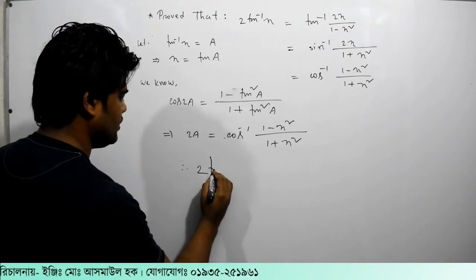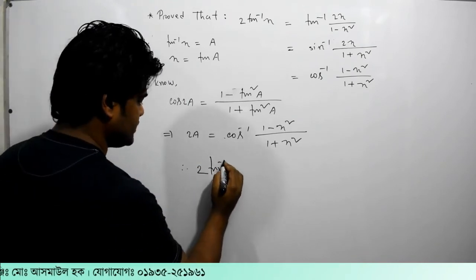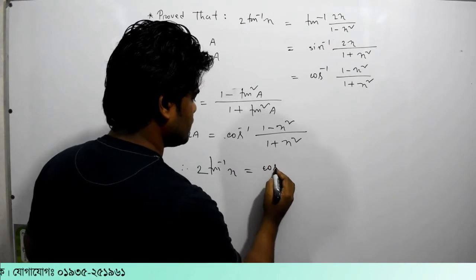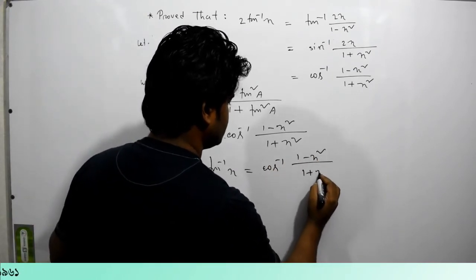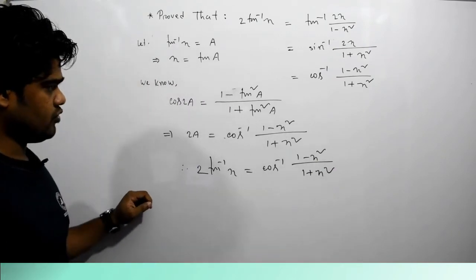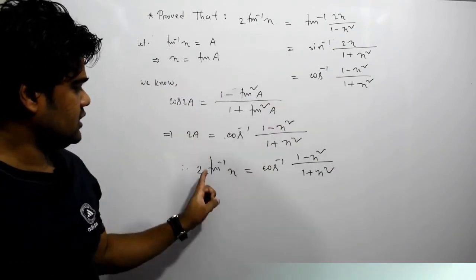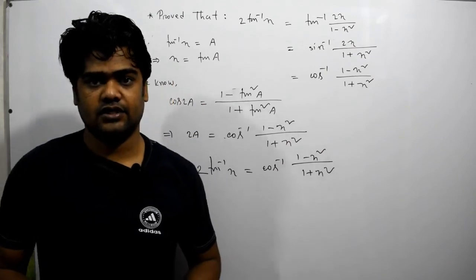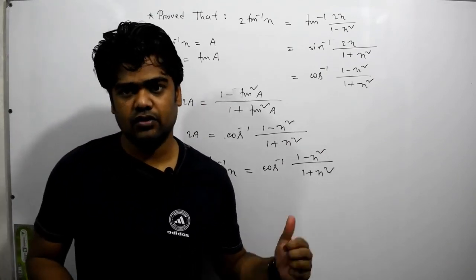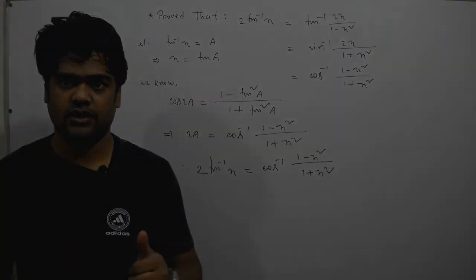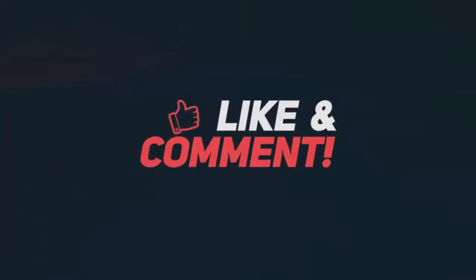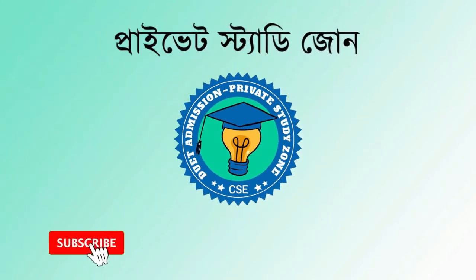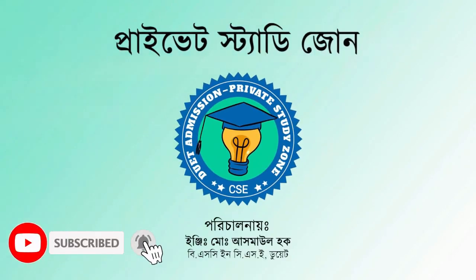2a is equal to sin inverse x, which is equal to sin inverse 1 minus x squared divided by 1 plus x squared. 2a is equal to sin inverse 1 plus x squared.